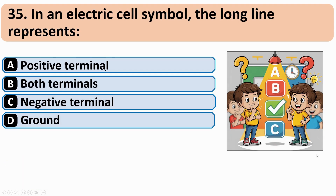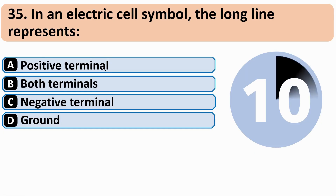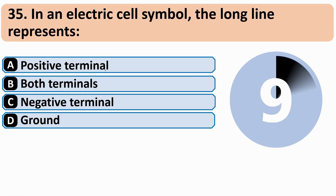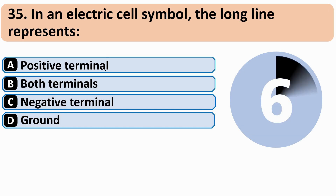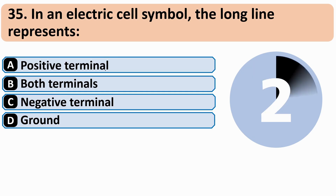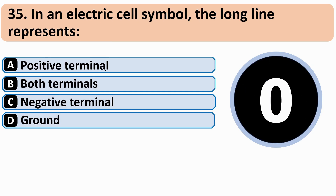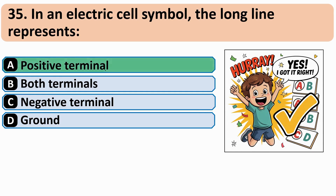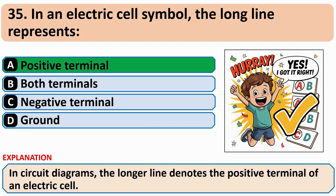In an electric cell symbol, the long line represents: the correct answer is A: Positive terminal.